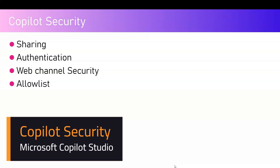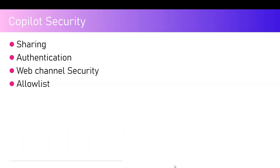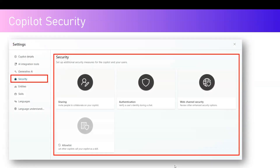In this video, I'm going to talk about the Copilot security settings within Copilot Studio. There are a couple of things you can do from this setting: you can share your copilot with authors, collaborators, or copilot users who will consume it. You can set up authentication for content access, content retrieval, themes, or Entra ID authentication. Web channel security is about setting up a direct client channel configuration to secure your copilot at a greater level. There are four options available: sharing, authentication, web channel security, and allow list.